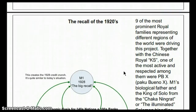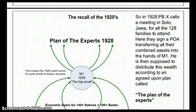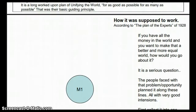Nine of the most prominent royal families representing different regions of the world were driving this project, together with the Chinese royal KS. One of the most active and respected among them was PBX — Pak Benu — M1's biological father and the King of Solo from the Chakra Nagret, the illuminated Solomon bloodline. In 1928, PBX called a meeting in Solo, Jawa, Indonesia for all 128 families to attend. There they signed a power of attorney transferring all their combined assets into the hands of M1, Socorno, who was then supposed to distribute the wealth according to the agreed-upon plan.